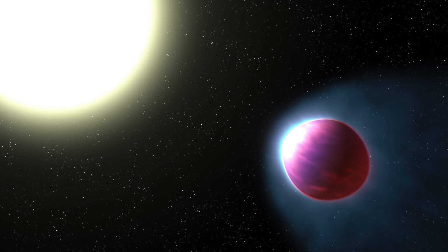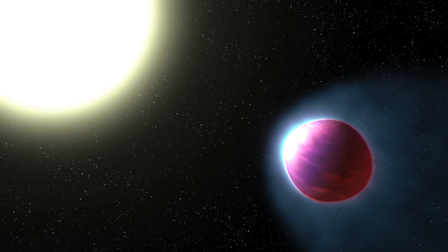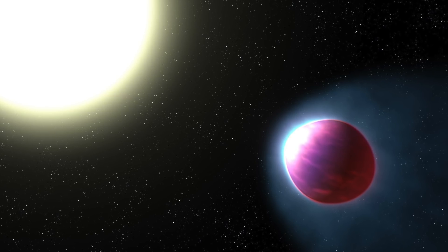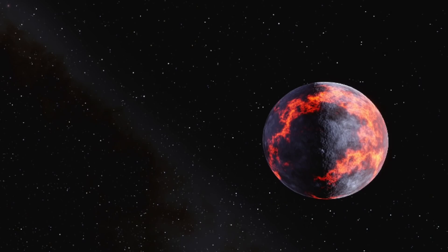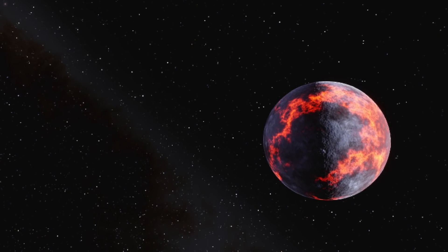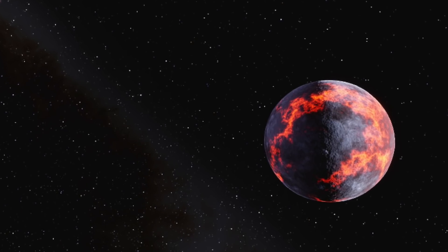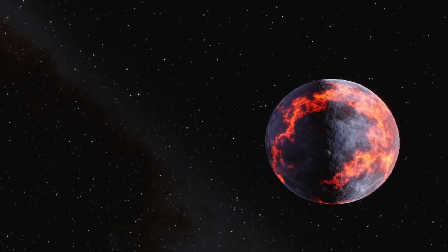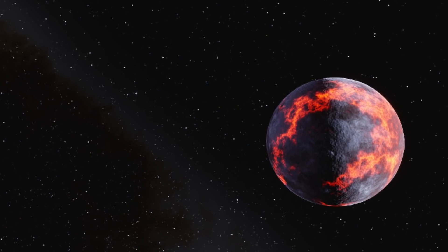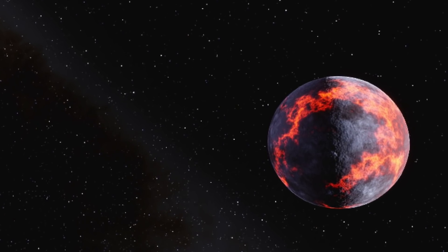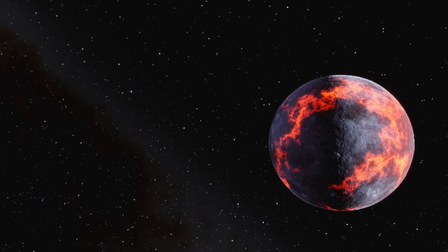NASA's Hubble captures the clearest view of the dark side of a hot Jupiter exoplanet. Those of us stuck here on Earth are familiar with the fact that our planet completes a full rotation on its axis so that the entire surface is illuminated by the Sun once every 24 hours. This is not the case for all celestial bodies within the solar system, though.